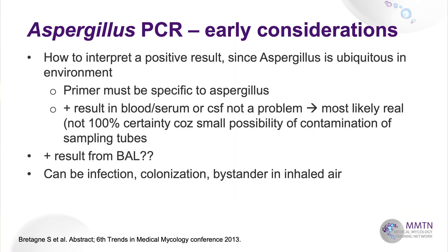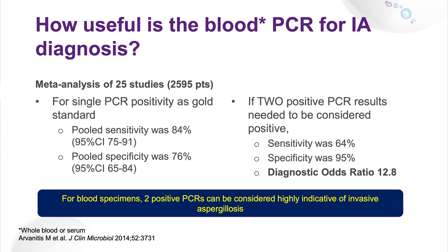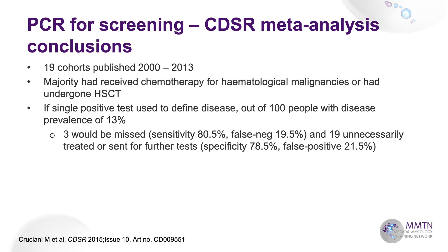Regarding Aspergillus PCR — several speakers have alluded to this. A positive result from BAL must be treated with some caution. For blood PCR, meta-analyses point out that you actually need two positives: with two positives, sensitivity was 64% and specificity 95%. This Cochrane meta-analysis concludes that for blood specimens, two positive PCRs are needed to be indicative of IA.